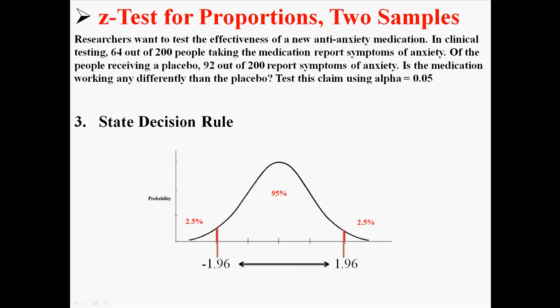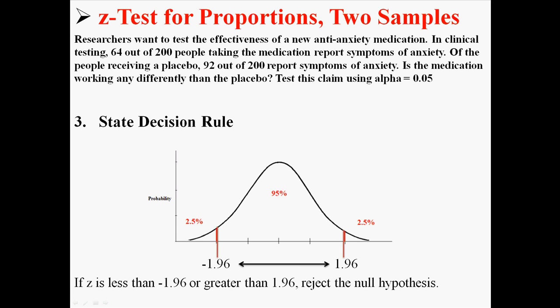We would expect whatever Z we calculate to be between negative 1.96 and positive 1.96. If it's outside of that, we can conclude that it's a rare event and reject the null hypothesis. So the decision rule is: if Z is less than negative 1.96 or greater than positive 1.96, we are going to reject the null hypothesis.